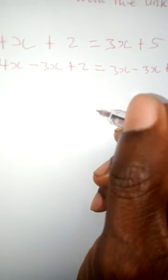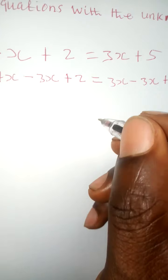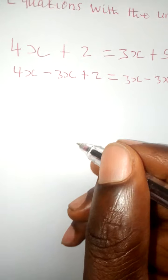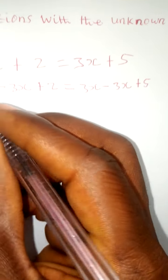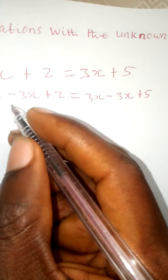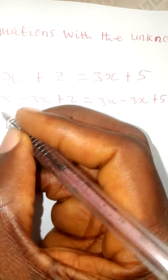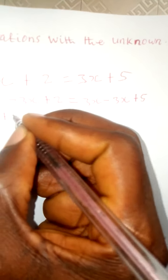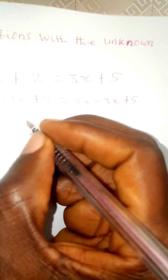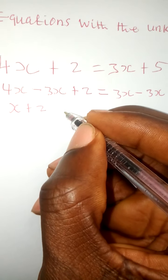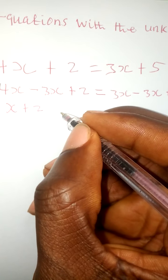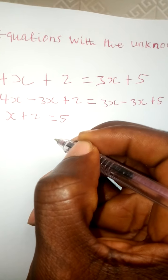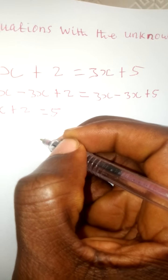Then we have plus 5, so we have 3x minus 3x plus 5. If 4x minus 3x, we're going to have 1x, then plus 2, and then we have 5.